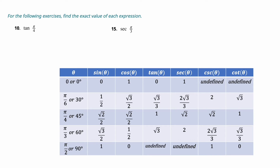To build the sine column, start by writing 0, 1, 2, 3, 4. Then take the square root of each: √0 = 0, √1 = 1, leave √2 and √3 as they are, and √4 = 2. Then divide all by 2: you get 0, 1/2, √2/2, √3/2, and 1. That gives you the sine values for the special angles.